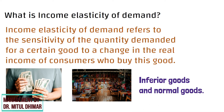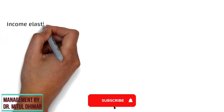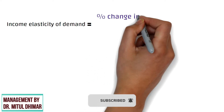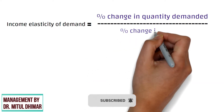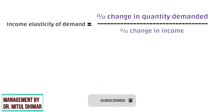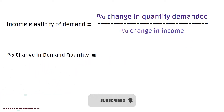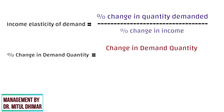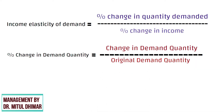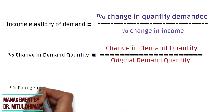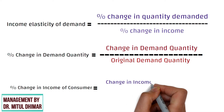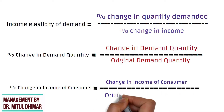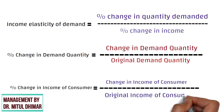The formula for calculating income elasticity of demand is the percent change in quantity demanded divided by the percent change in income. Percent change in demand quantity is equal to change in demand quantity divided by original demand quantity. Percent change in income of consumer is equal to change in income of consumer divided by original income of consumer.